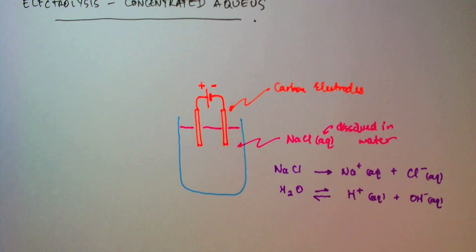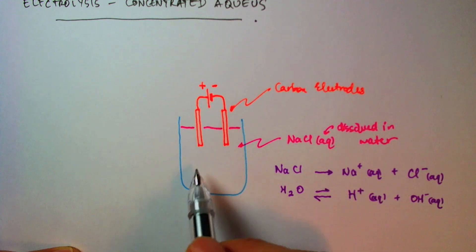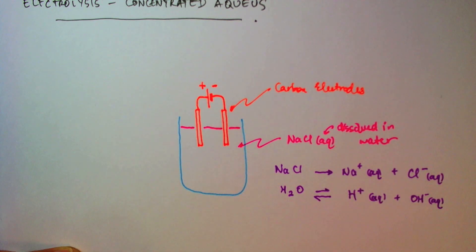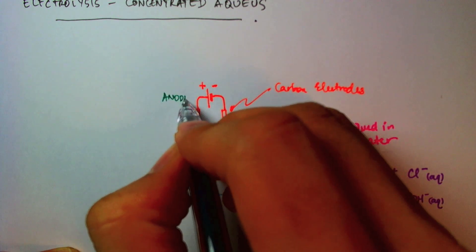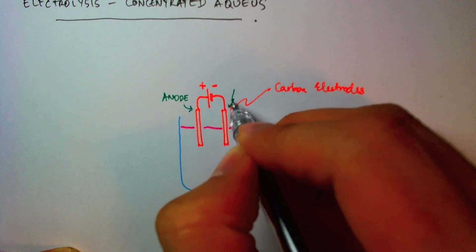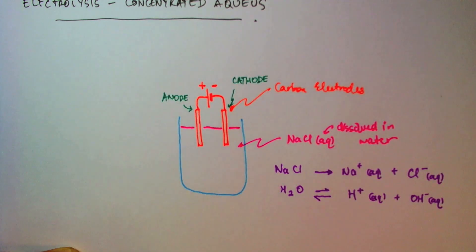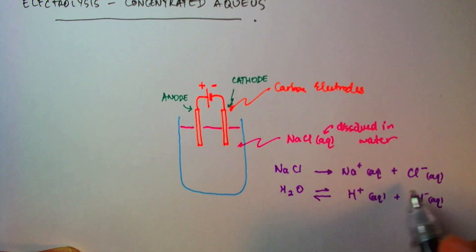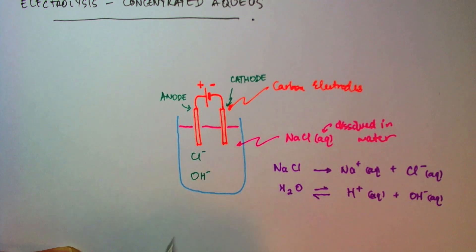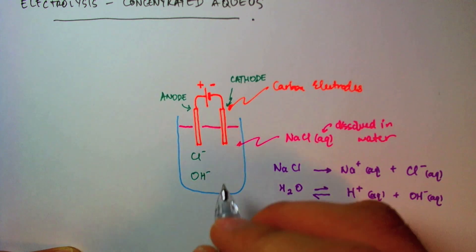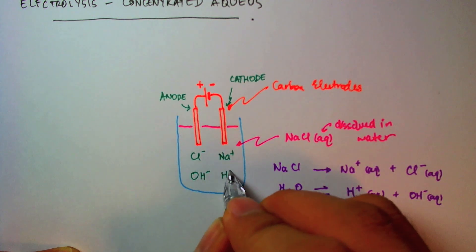So let's just line them up here. I have these ions all swimming around in this solution. Naturally, the negative ions are going to be attracted to the positive electrode, namely the anode. So I'll write anode and cathode just so we're clear. The chloride ions and the hydroxide ions are attracted to the anode, and the sodium and hydrogen ions are attracted to the cathode.